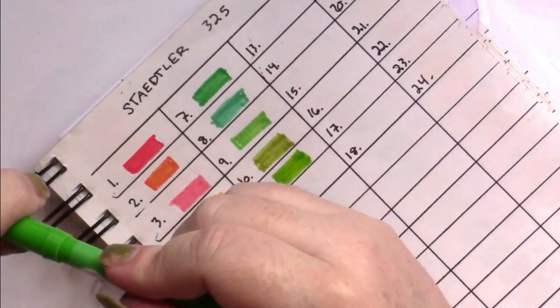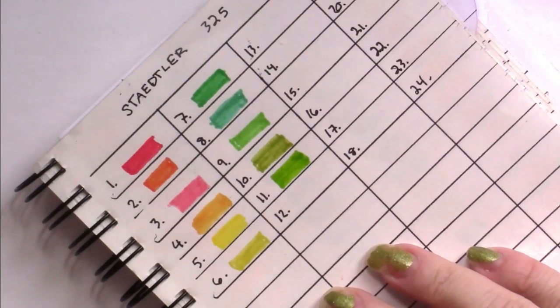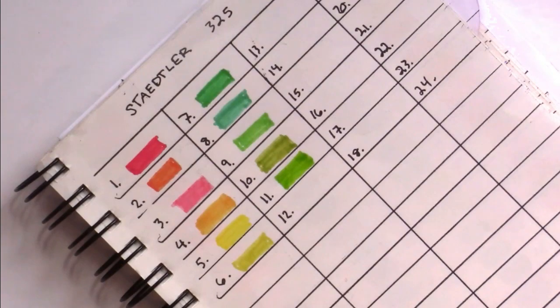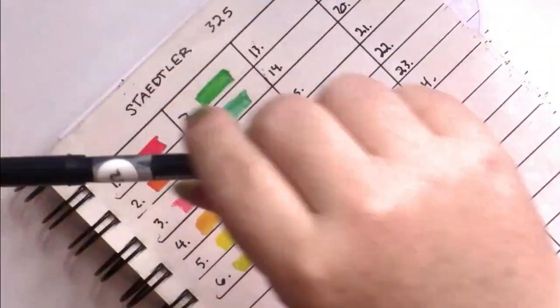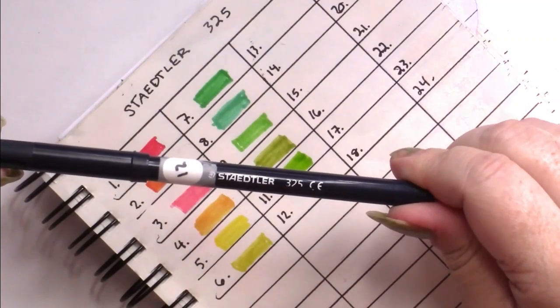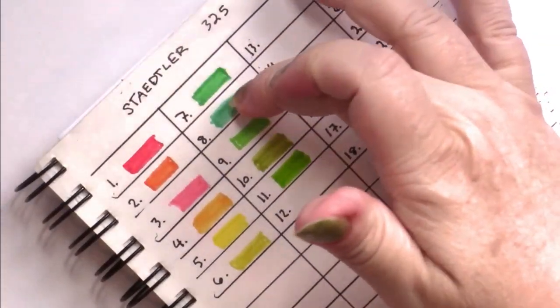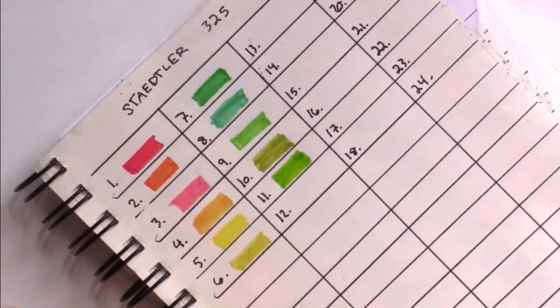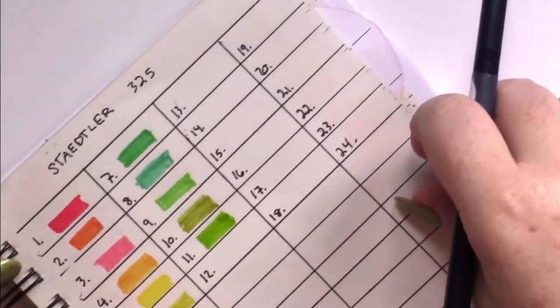So these are working nicely. They are a little bit dry. Some of them are juicier than others. So now we're moving on to the blues. So that's one, two, three, four, five greens. That's good for a set.